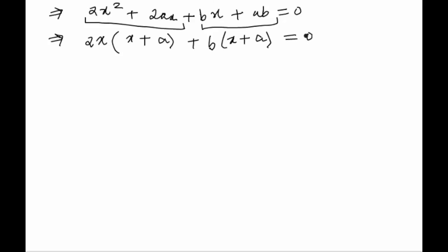Taking x plus a common from both the terms, we would be left with x plus a into 2x plus b is equals to 0.